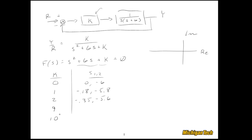At K = 2, we get negative 0.35 and negative 5.6. At K = 9, the two poles are the same: both at negative 3. Then as K goes above 9, they become complex — at K = 10, we have negative 3 ± j.